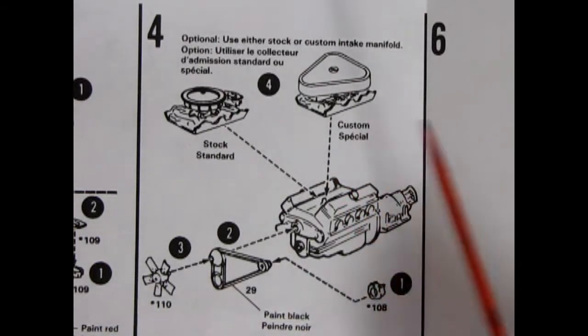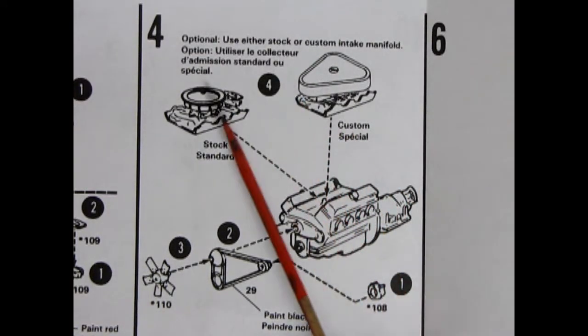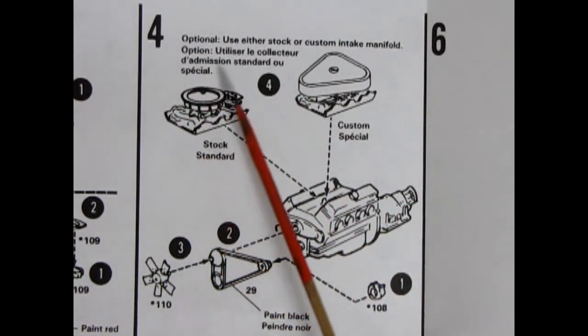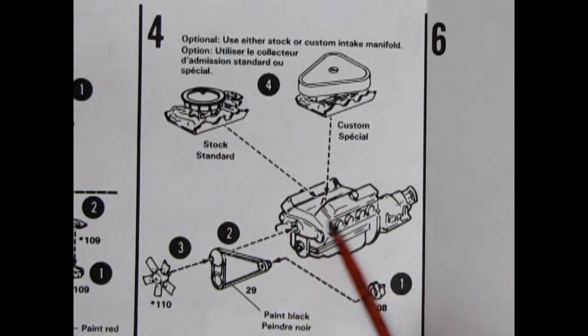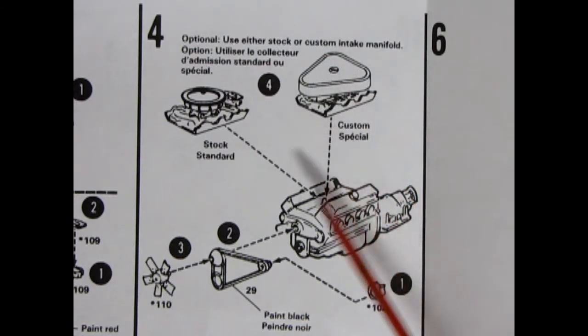Panel 4 shows our completed engine going together. Here we have of course the stock setup for the intake manifold and whatnot going on the top and then our custom version which could be in place of that. Then we have our alternator, our fans and pulleys and our fan.